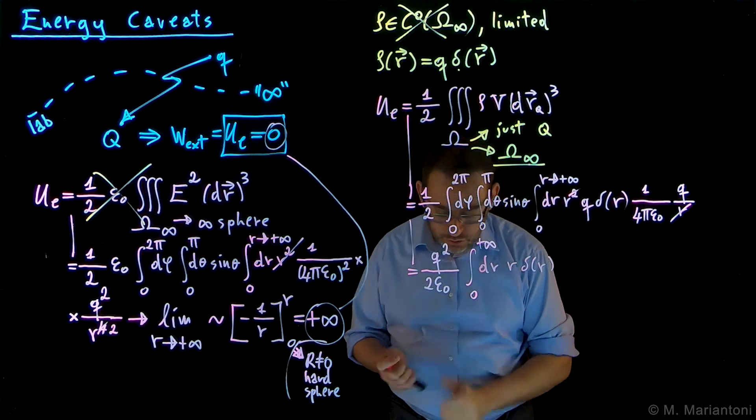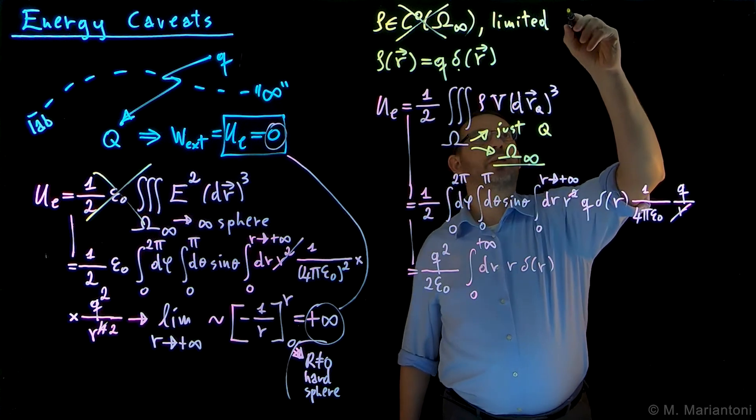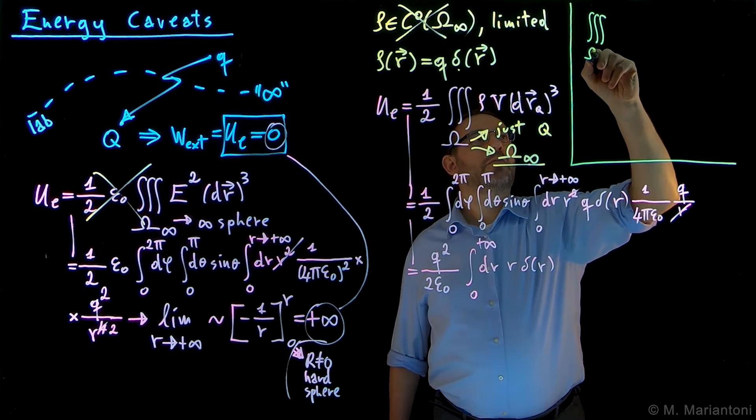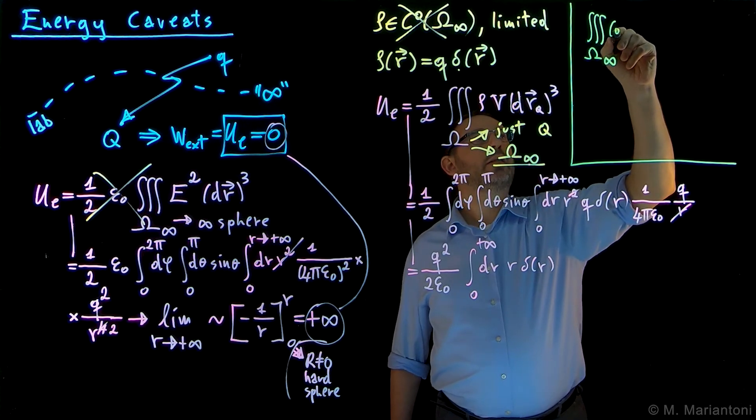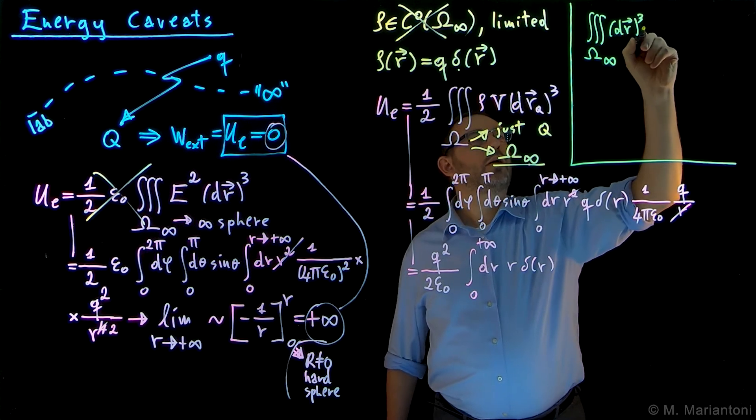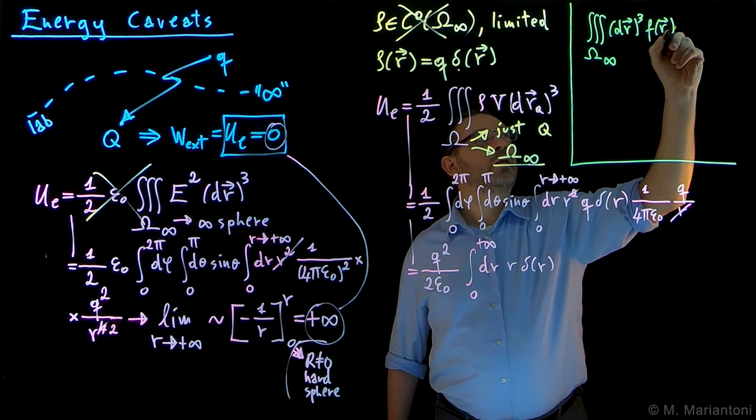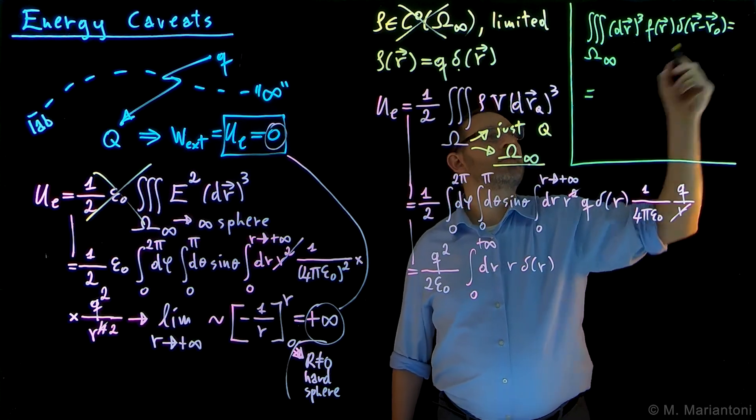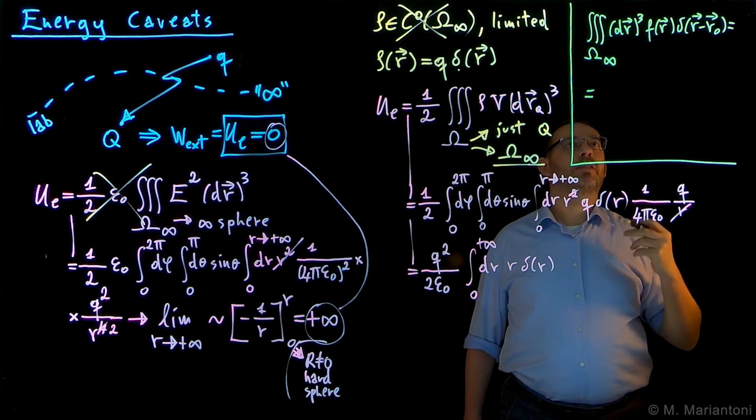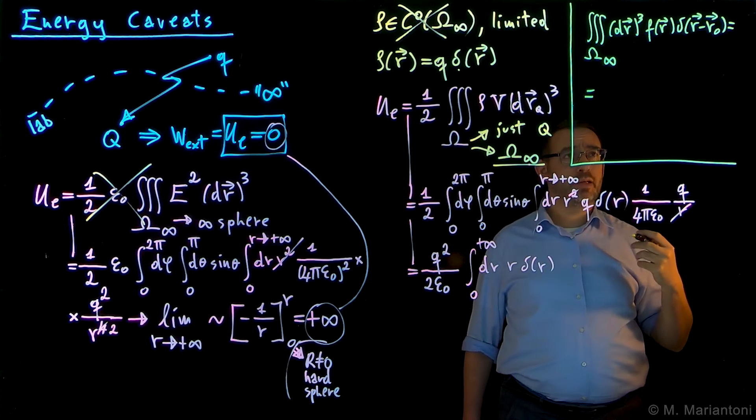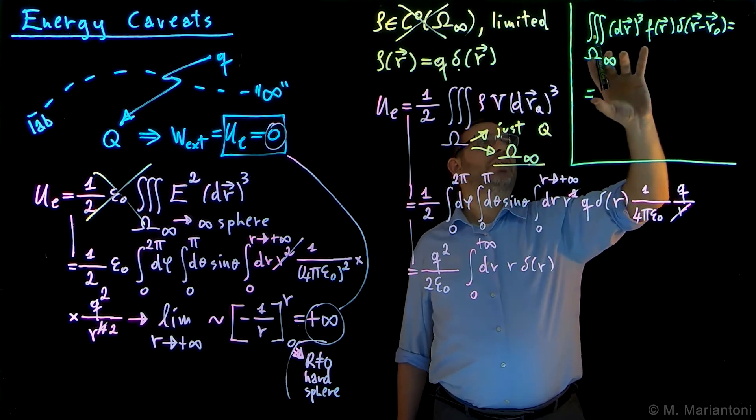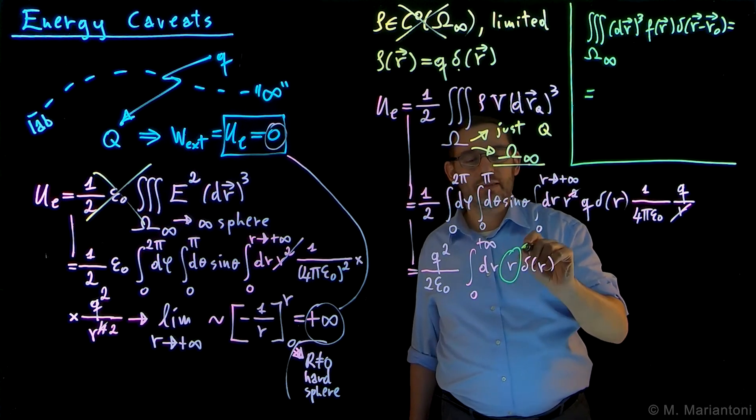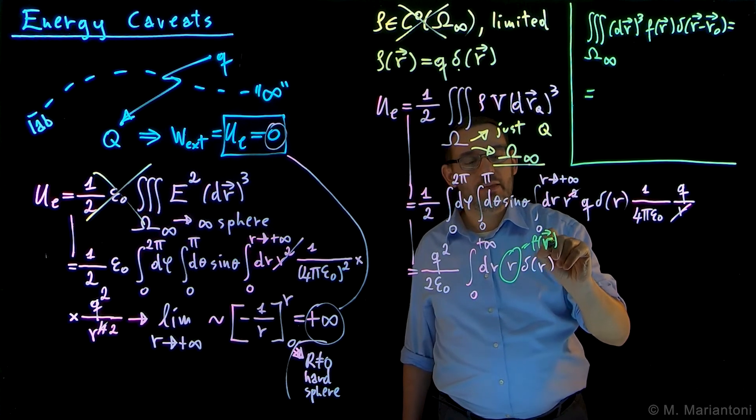Now, in class I told you that I want you to discuss about an important property of the Dirac delta, which I'm here summarizing. The property was: what happens when we perform the integral on omega infinite, which is what we are doing here, in dR vector cubed of a function f of R, delta Dirac R minus R naught? Well, this integral, as it turns out, is super simple. I will not prove it, but you could if you were to work on, to study a field of distributions.